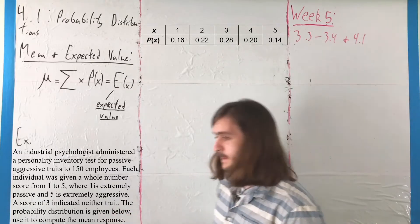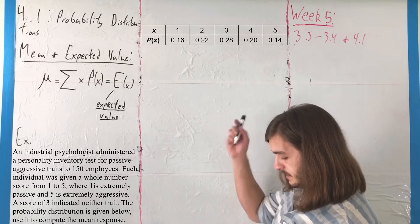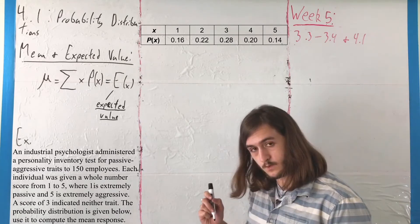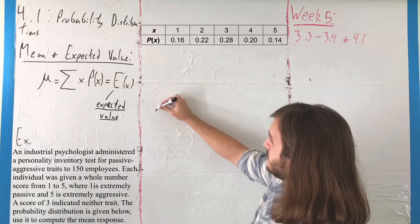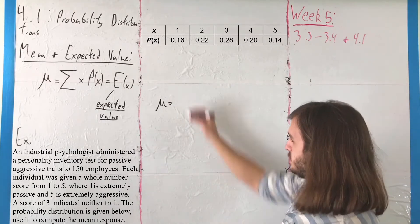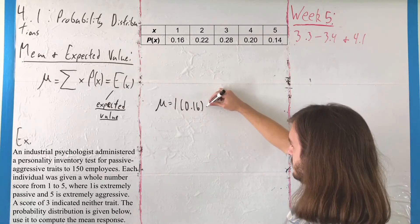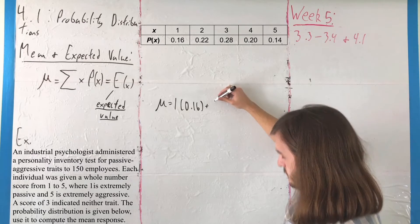For this, we're going to compute a weighted mean. We've got our values that we're working with. To get our mean μ, we just take each of the scores, multiply by their associated probability, and add them up.